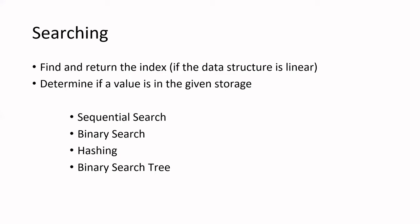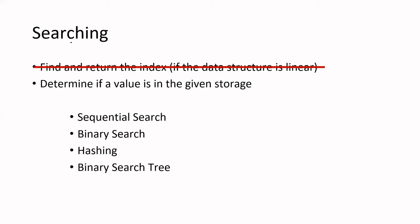There are two different types of searching tasks. The first is to find and return the index in a linear data structure. The other is determining if a value is in the given storage or not — this storage doesn't have to be linear, so the second one has a wider range of application. We're going to skip the first and focus on the second task.